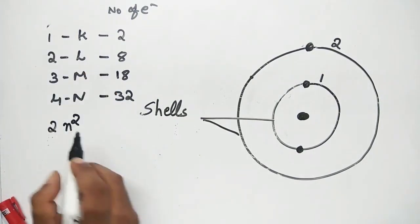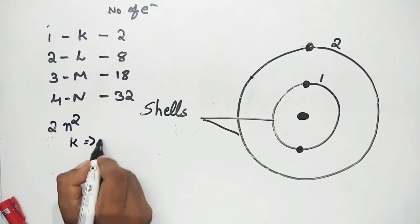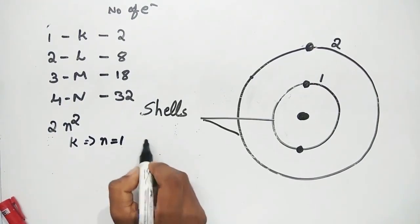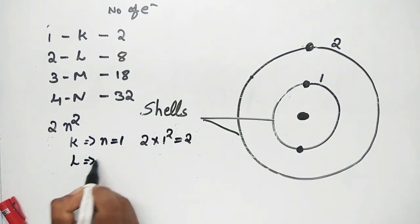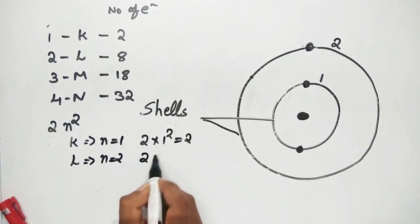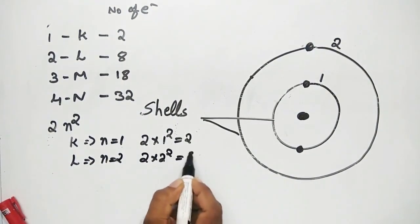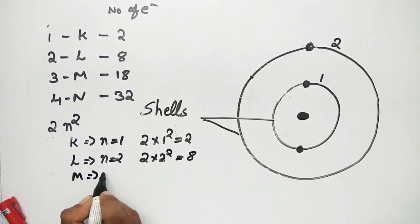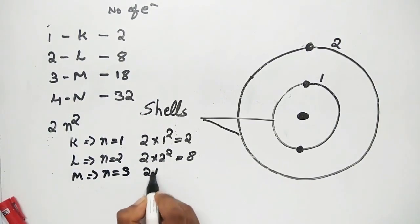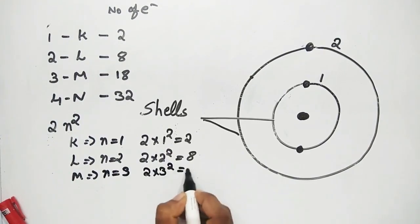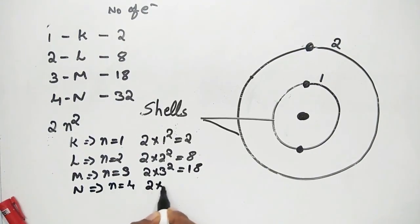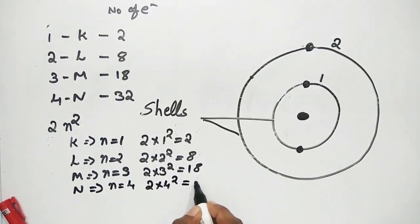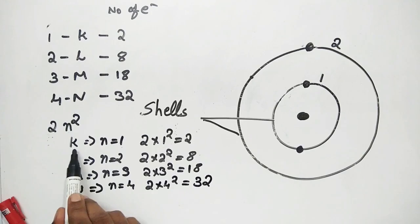For K shell, n equals 1, so 2×1² equals 2. For L shell, n equals 2, so 2×2² equals 8. For M shell, n equals 3, so 2×3² equals 18. For N shell, n equals 4, so 2×4² equals 32. So we can determine the maximum number of electrons in each shell.